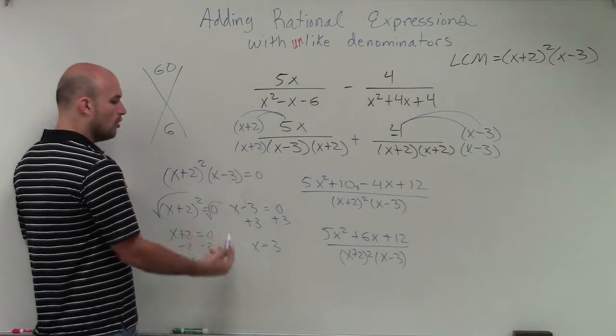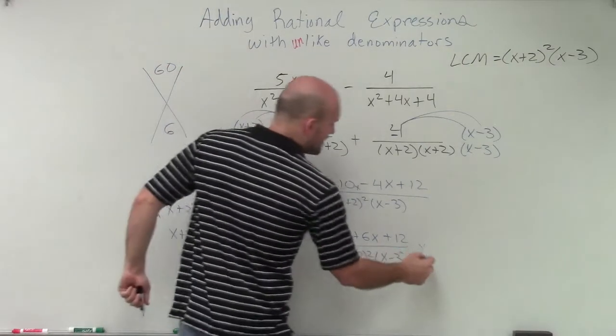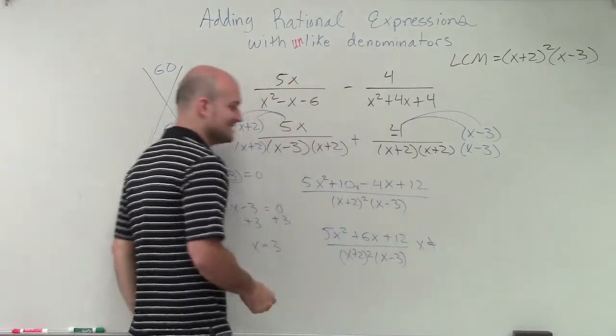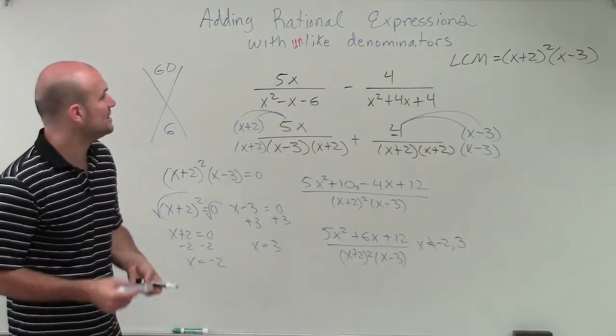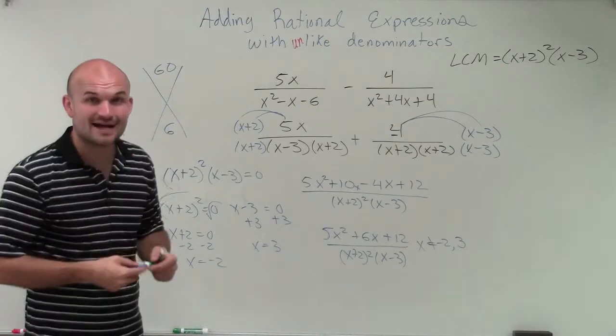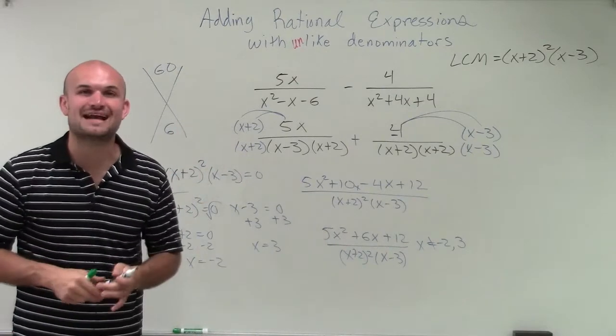So therefore, when x equals negative 2, or when x equals 3, my denominator equals 0. So therefore, my restriction states that x cannot equal negative 2 or positive 3. So there you go, ladies and gentlemen. And that is how you subtract rational expressions with unlike denominators. Thanks.